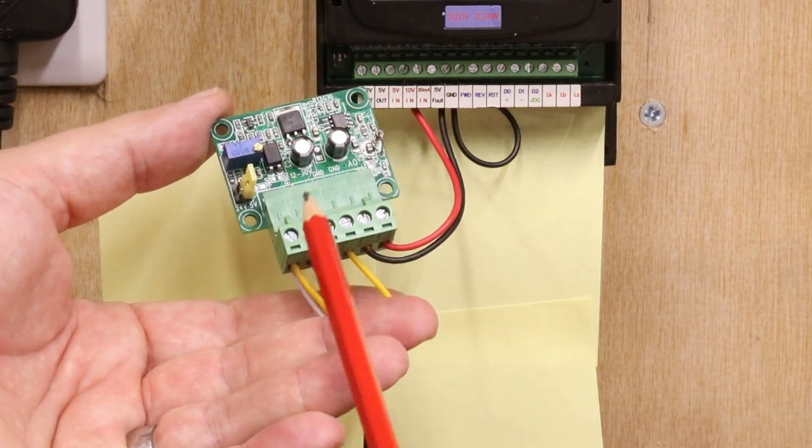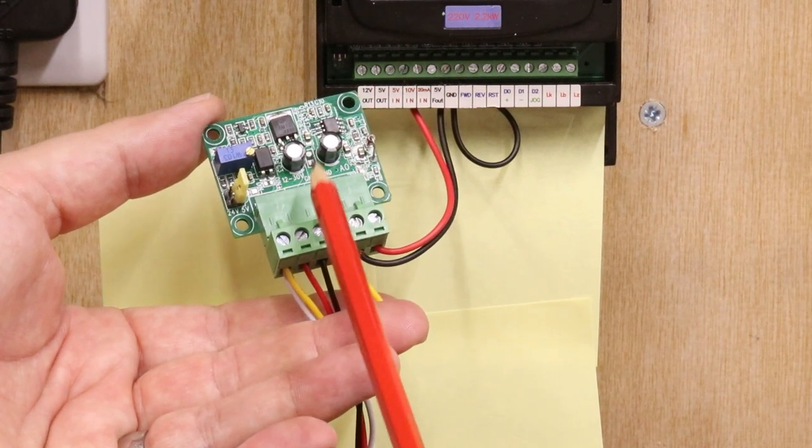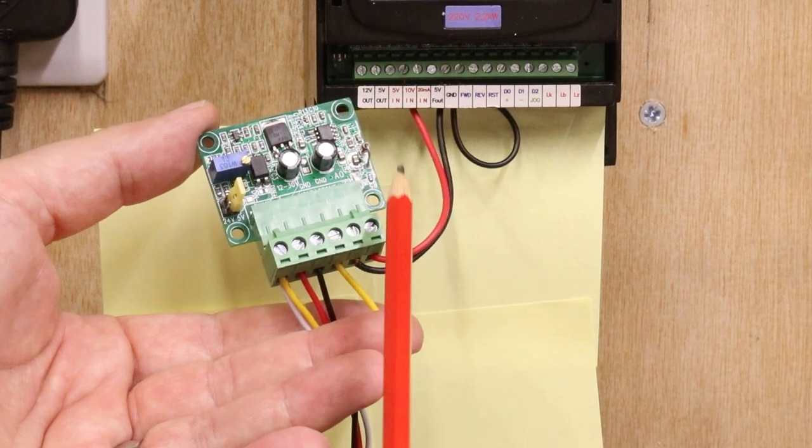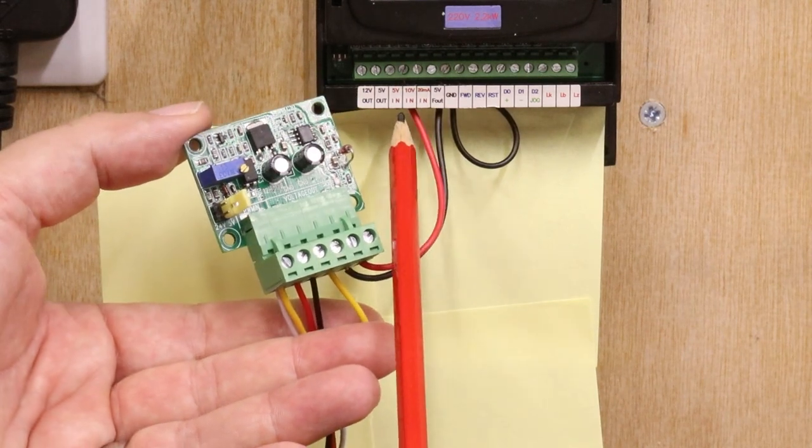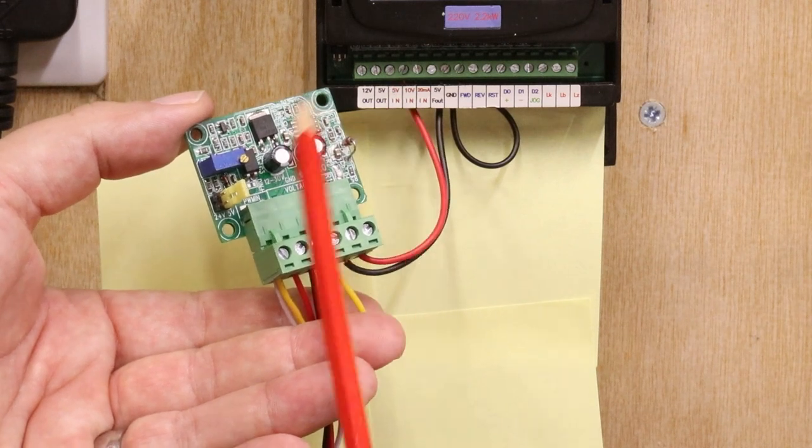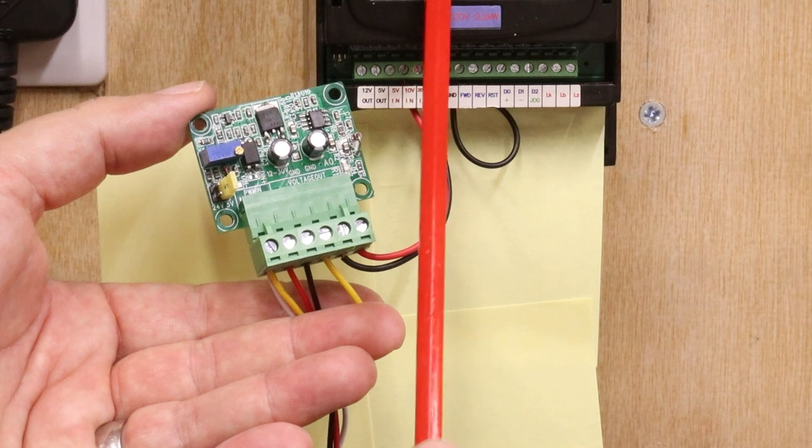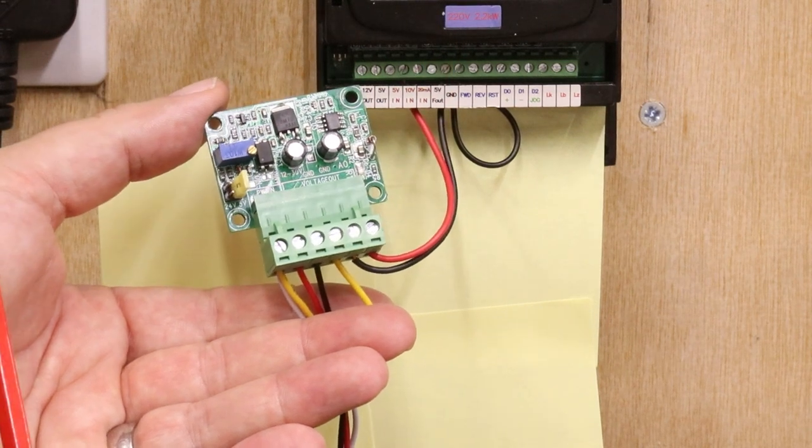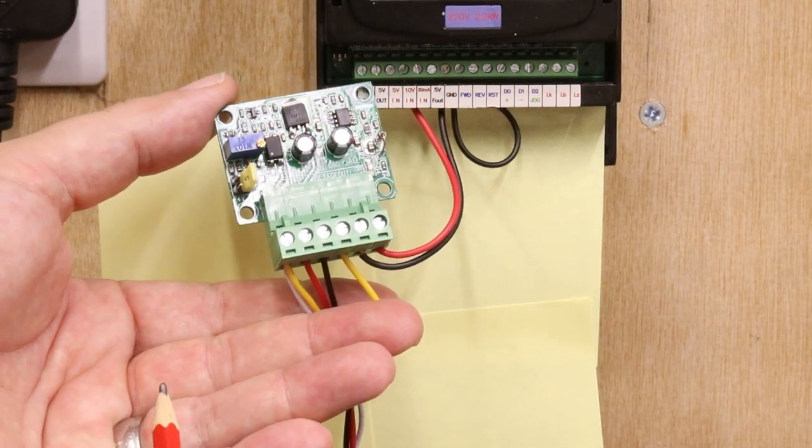Now the difference between this and the original setup is this will output up to 10 volts. So what we've had to do is move the input signal on the VFD from the 5 volt in to the 10 volt in, and obviously adjust that setting that I mentioned earlier on the setup itself in order to detect the 10 volt in.